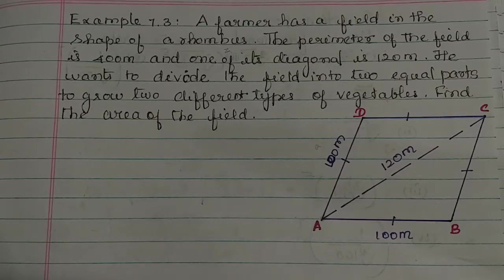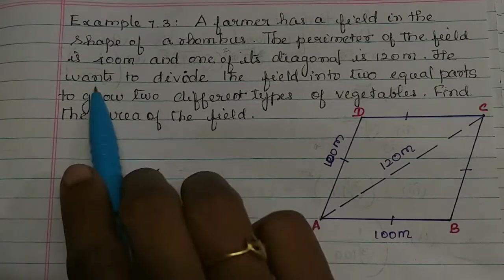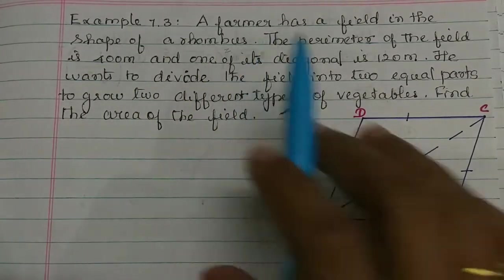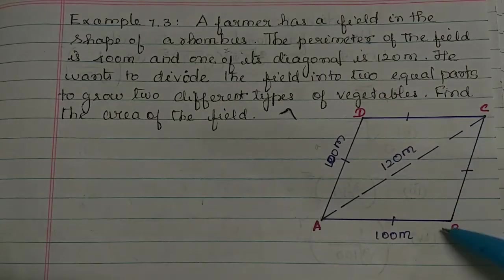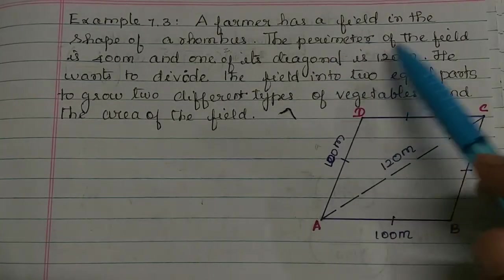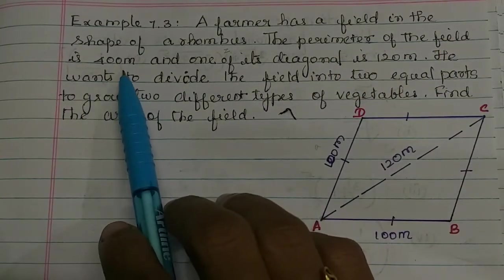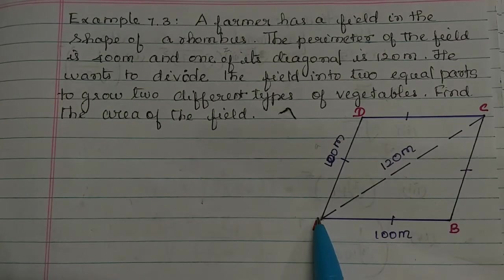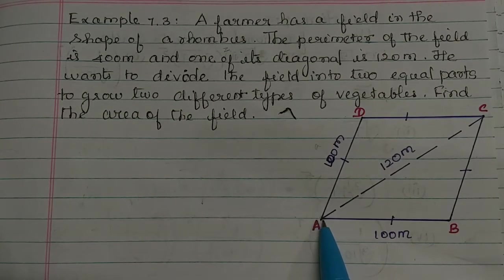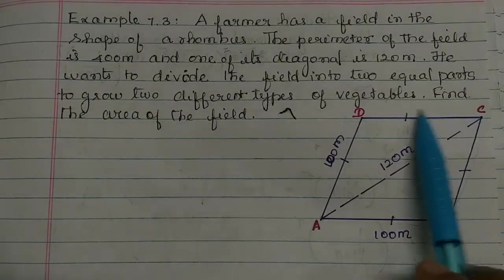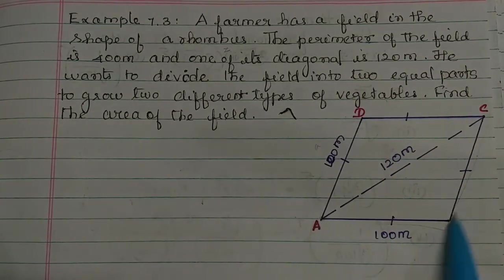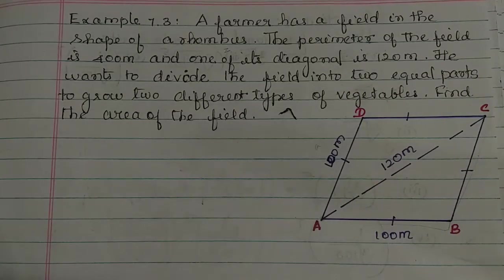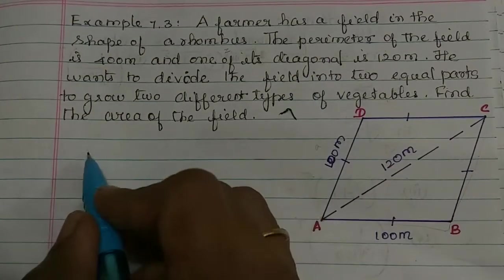Hi students. In this video we have example 7.3: a farmer has a field in the shape of a rhombus. The perimeter of the field is 400m. From A to B, B to C, C to D, plus D to A — if we add all 4 sides, we have 400m. That is the perimeter.